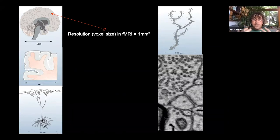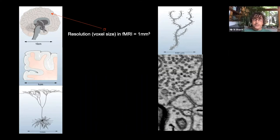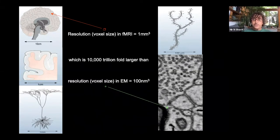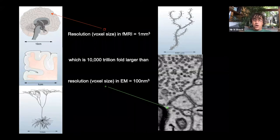In this electron microscope, if an fMRI image pixel is a cubic millimeter, what I'm showing you — a pixel of this electron microscopy image — is essentially 10,000 trillion times smaller. So this is the resolution we need. You really have to look deep inside at the very tiny scale of your brain to start to understand what's going on.